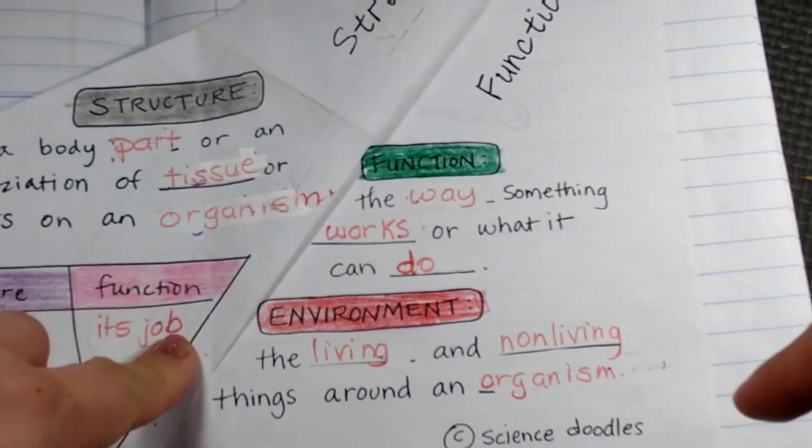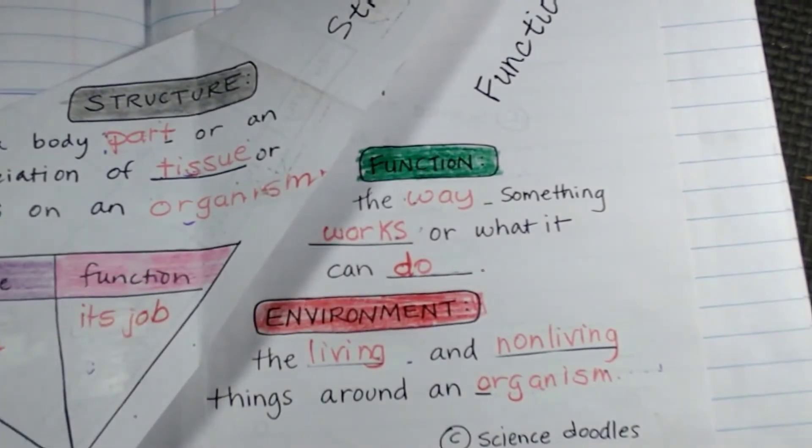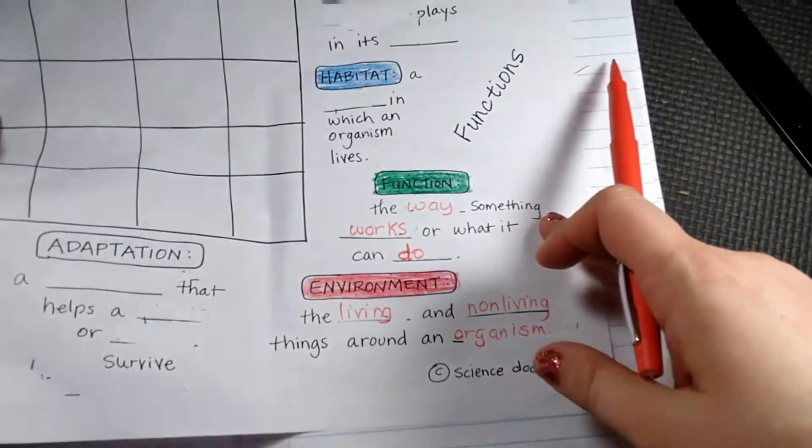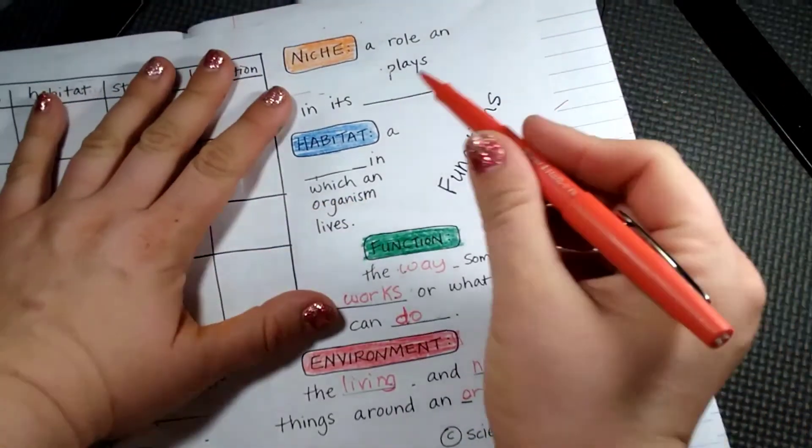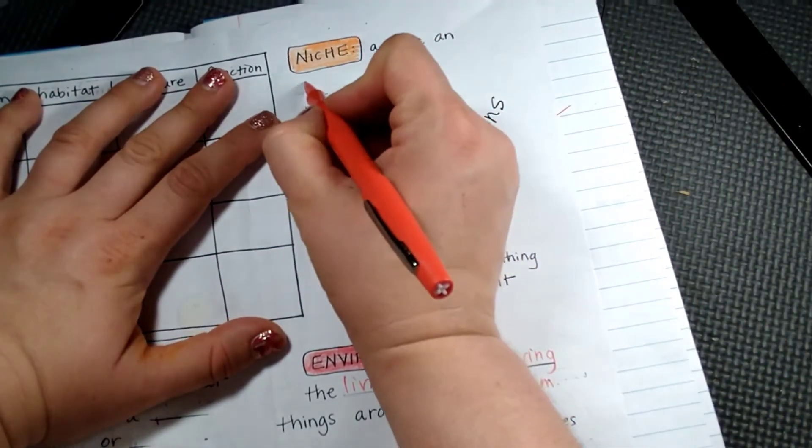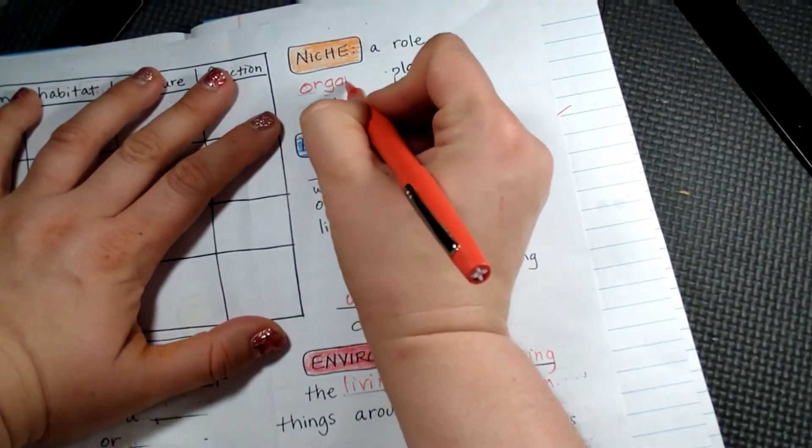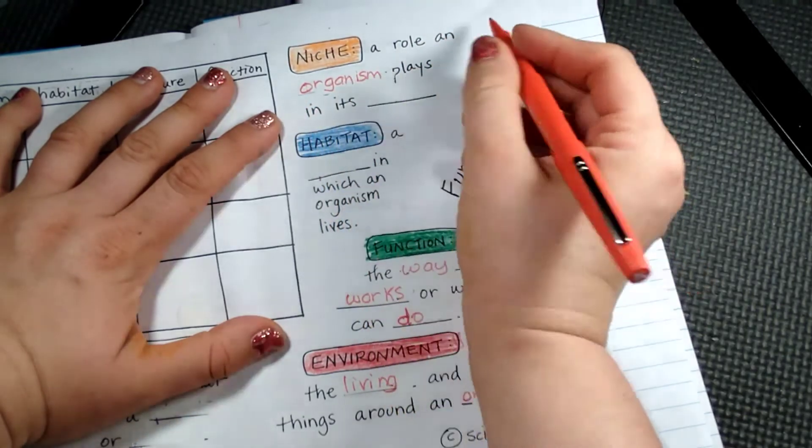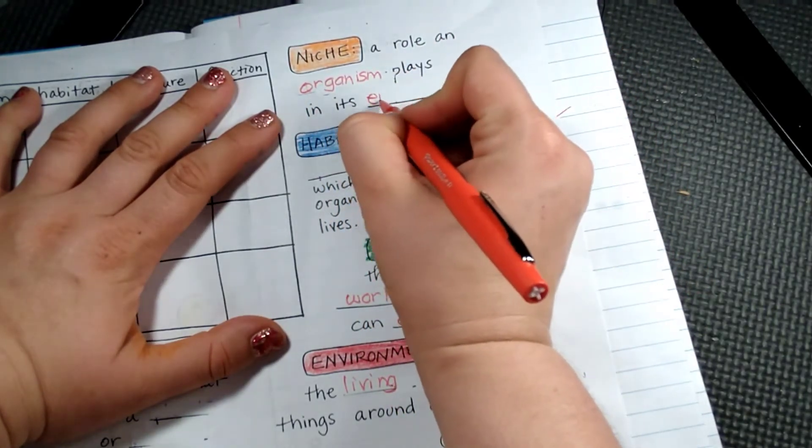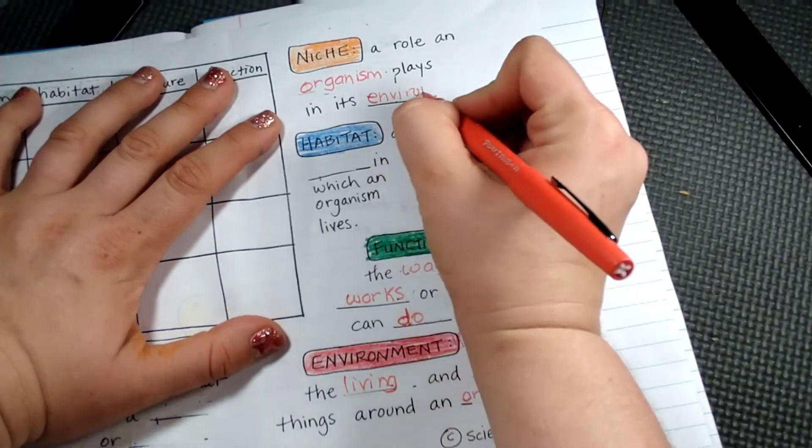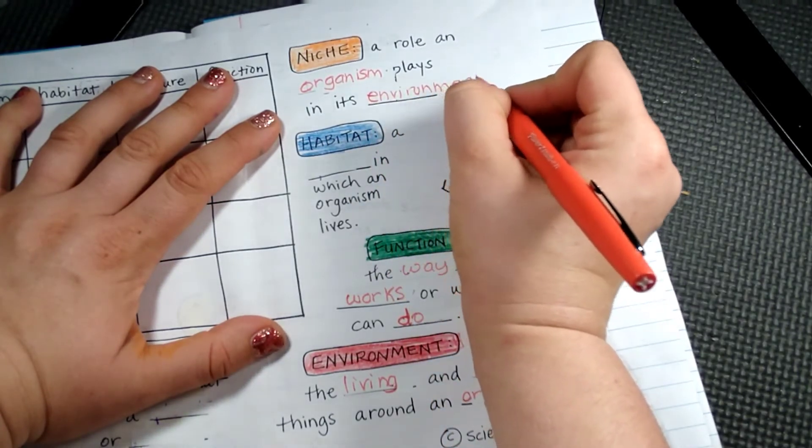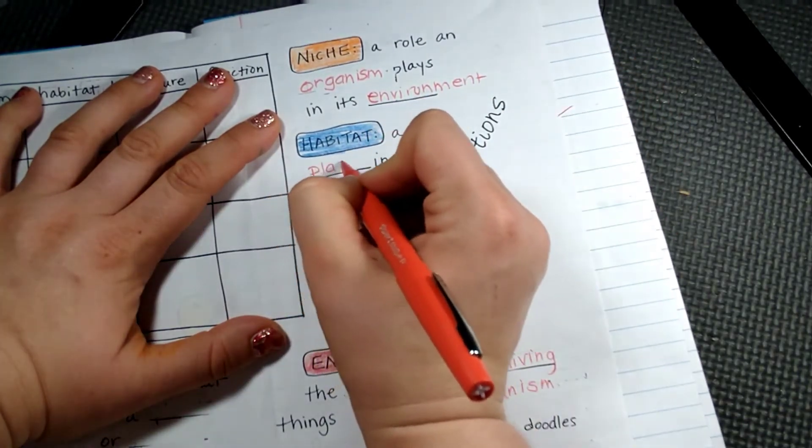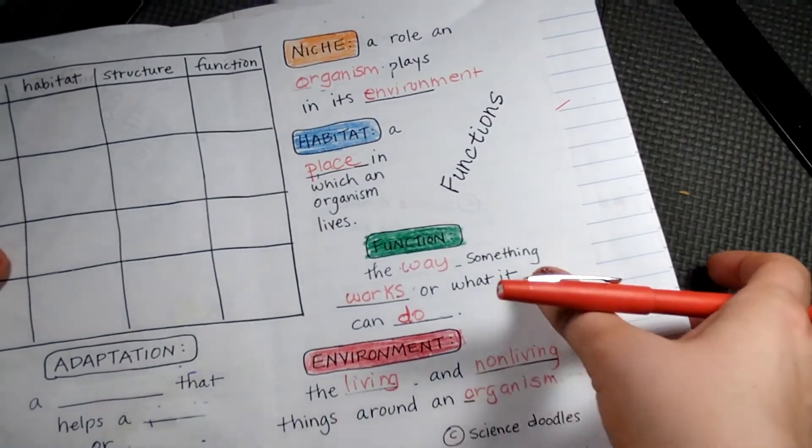So pause that, finish the notes and come on back. All right. A niche is a role an organism plays in its environment. What is its job? And then we also need to know a habitat is a place where an organism lives. We're going to be learning a lot about habitats.